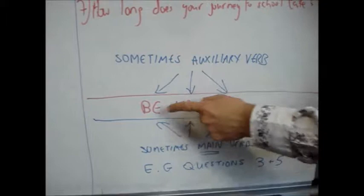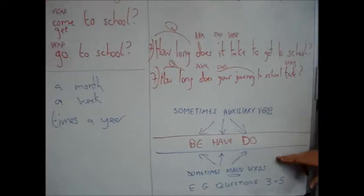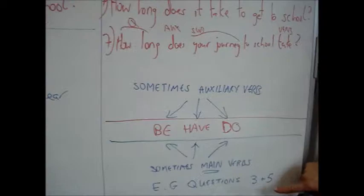Remember, sometimes be, have, and do can be the auxiliary verb: question word, auxiliary verb, subject verb. But sometimes they can also be the main verb.